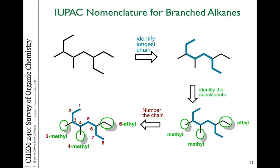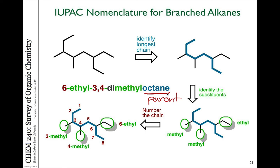So what is the complete name for this molecule? The parent is octane — an eight-carbon chain. The prefix is made up of the three substituents: one ethyl group, alphabetized by the 'E', and two methyl groups (dimethyl), alphabetized by the 'M'. The ethyl group is attached to the number-six carbon, and the two methyl groups are on carbons three and four. Thus the full name is 6-ethyl-3,4-dimethyloctane.